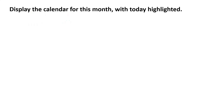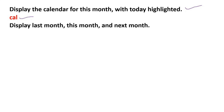If you want to display the calendar for this month with today's date highlighted, then you can use the command cal. Just type on the terminal 'cal' and it will display the month with today's date highlighted. If you want to display last month, this month, and next month — all three months — then on the terminal you type 'cal -3' and it will display last month, this month, and next month's calendar.